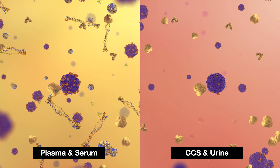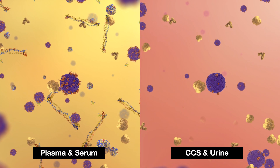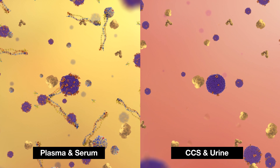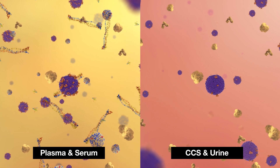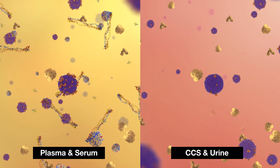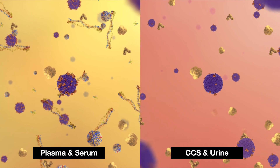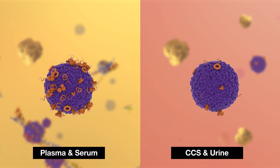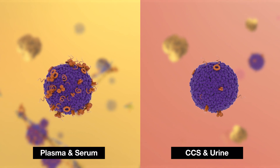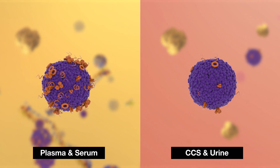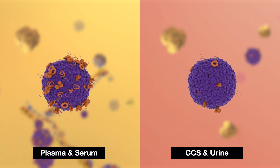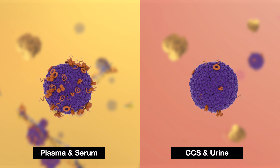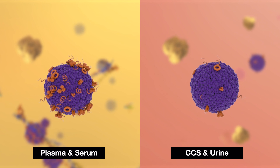There are proteins in various particles and biological samples, making it difficult to selectively isolate extracellular vesicles. For example, plasma contains large amounts of proteins such as fibrinogen and lipoprotein. Therefore, special technology is required to isolate extracellular vesicles.